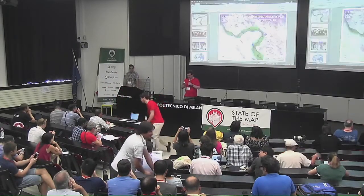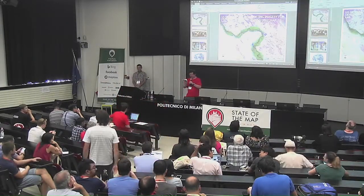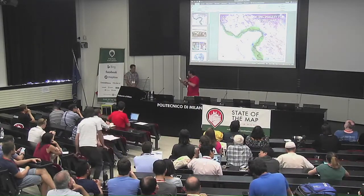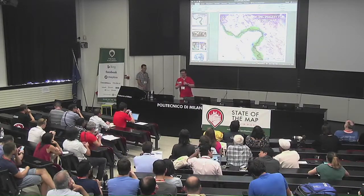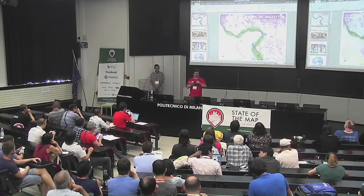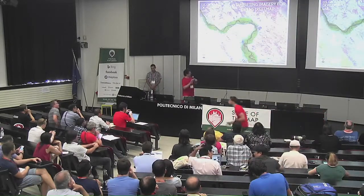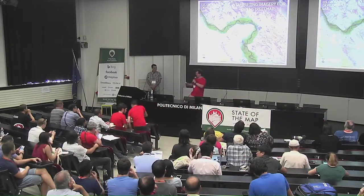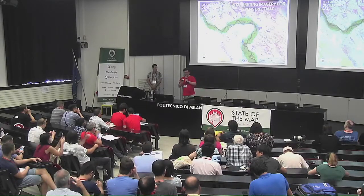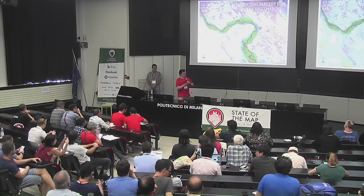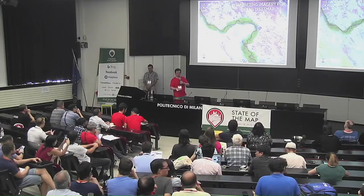So we start now. The first talk is by Chad Blavins — I hope I'm pronouncing correctly — from USAID, the US Agency for International Development, and his talk is about interpreting imagery for OpenStreetMap.